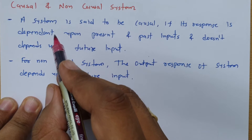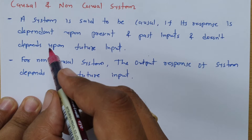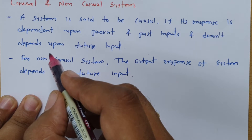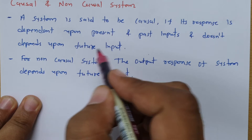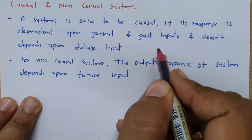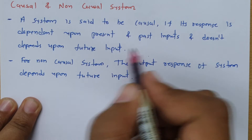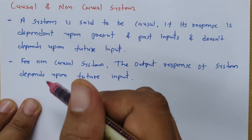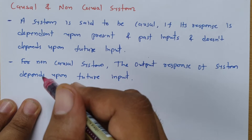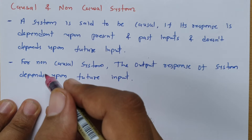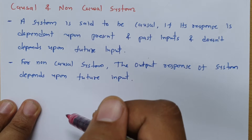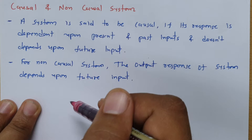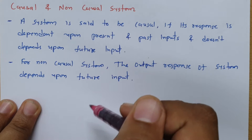A system is said to be a causal system if its output response depends on present and past inputs — it does not depend on future input. For a non-causal system, the output response depends on future input.